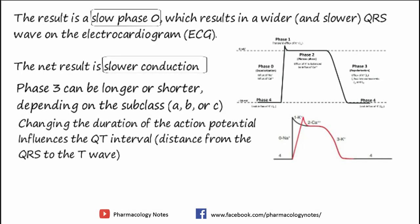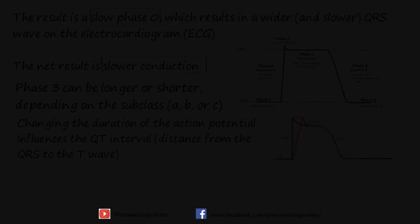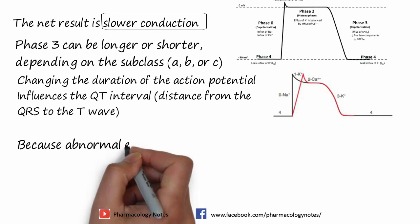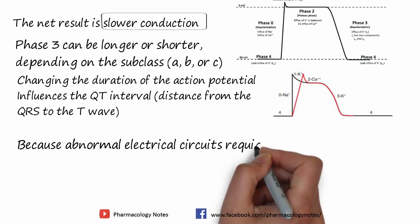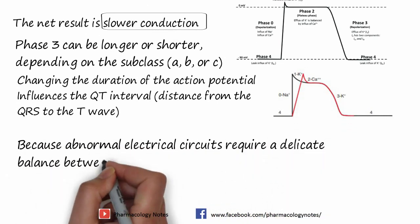You can see here phase 0, phase 1, phase 2, phase 3, and phase 4 in the diagrammatic representation. The black color shows normal waves, and the red color shows the effect of sodium channel blockers. Because abnormal electrical circuits require a delicate balance between conduction speed and refractory times, changing these parameters will sometimes terminate dysrhythmias or create new ones.